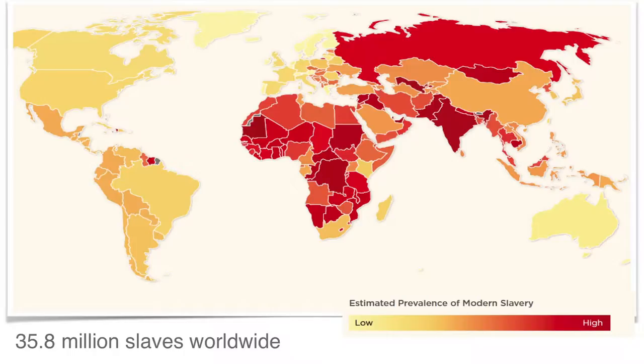We're actually up from 27 million — we're at about 35 million now. It's not because we believe there's actually been an increase in slavery; it's because our measurements have gotten much more precise in the last five years. This is a density map of slavery in the world today: 35 million people over these areas.